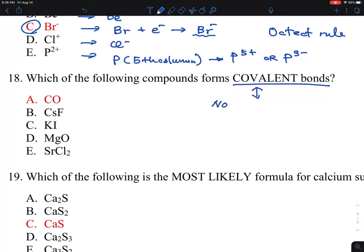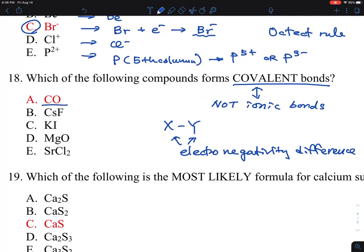And then this is typically X versus Y, the electronegativity differences. If it is smaller, then it's more covalent than ionic,